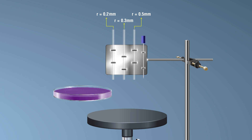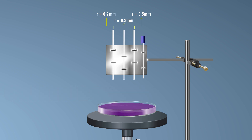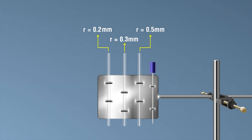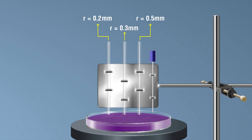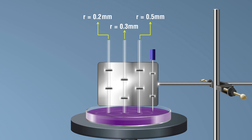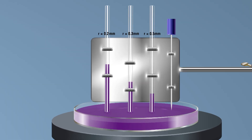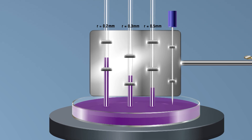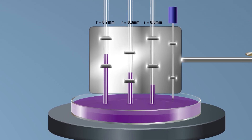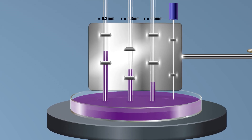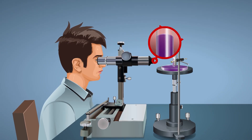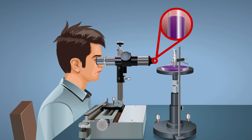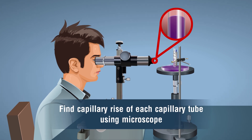Place the dish below the capillary tubes. Adjust the vertical stand so that the capillary tubes dip in the water. Adjust the pointer so that it just touches the surface of the water. Find the capillary rise using the traveling microscope.